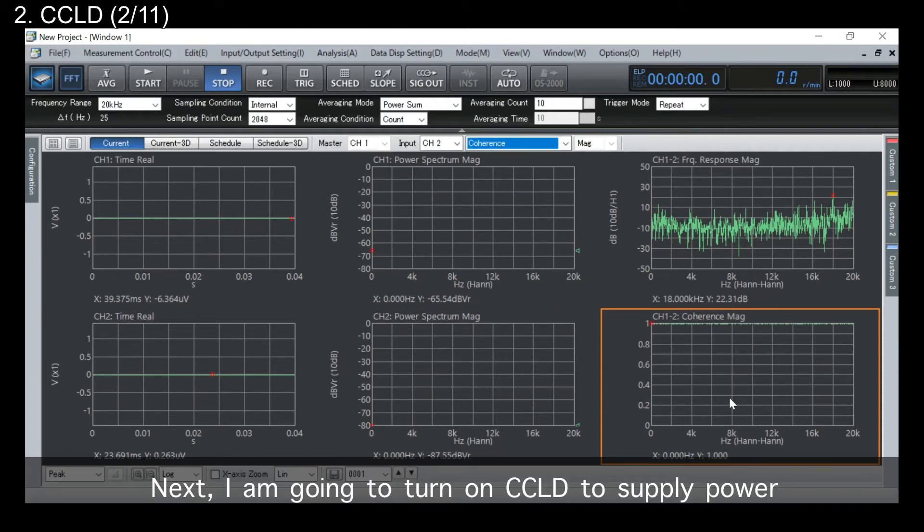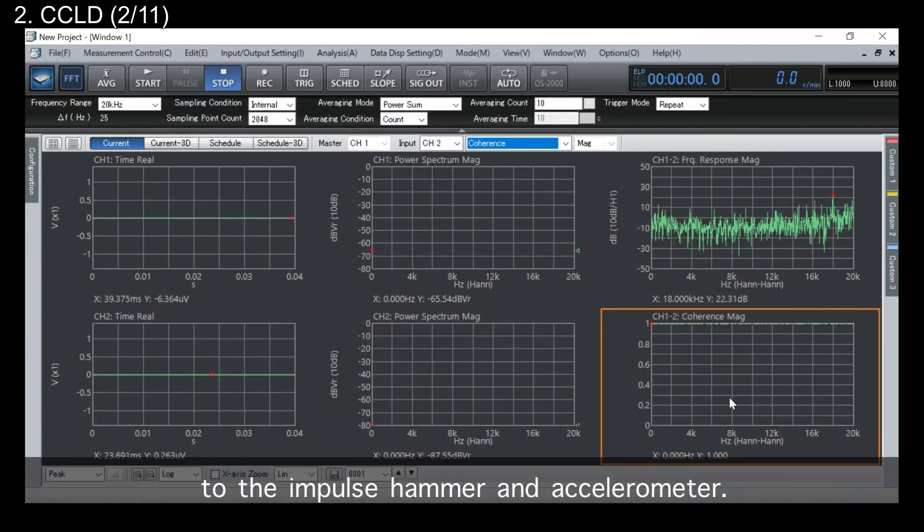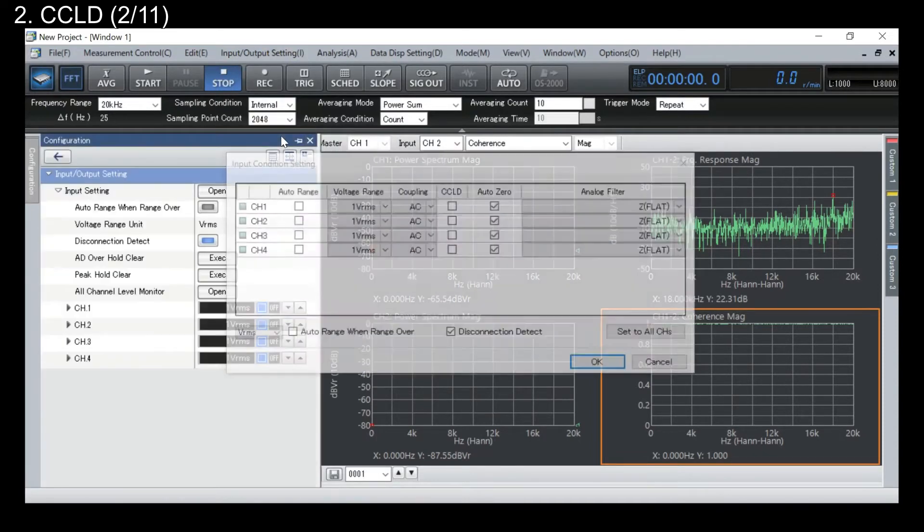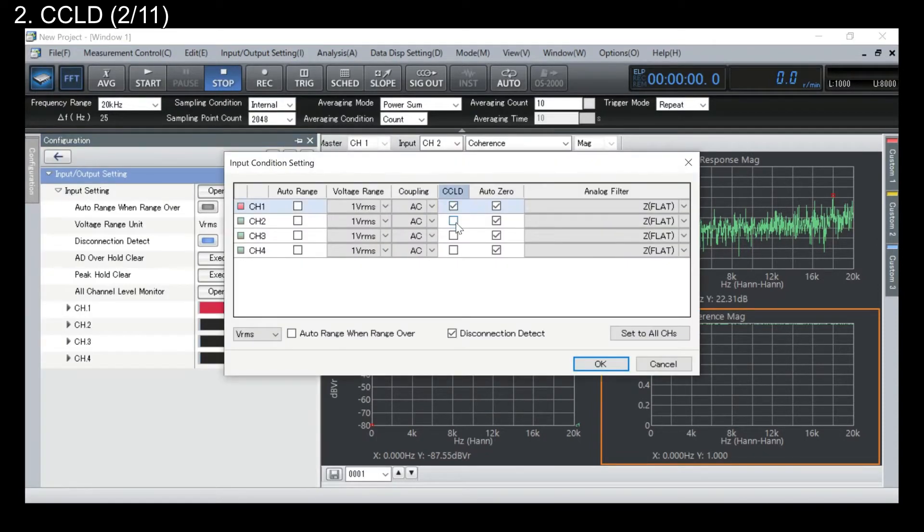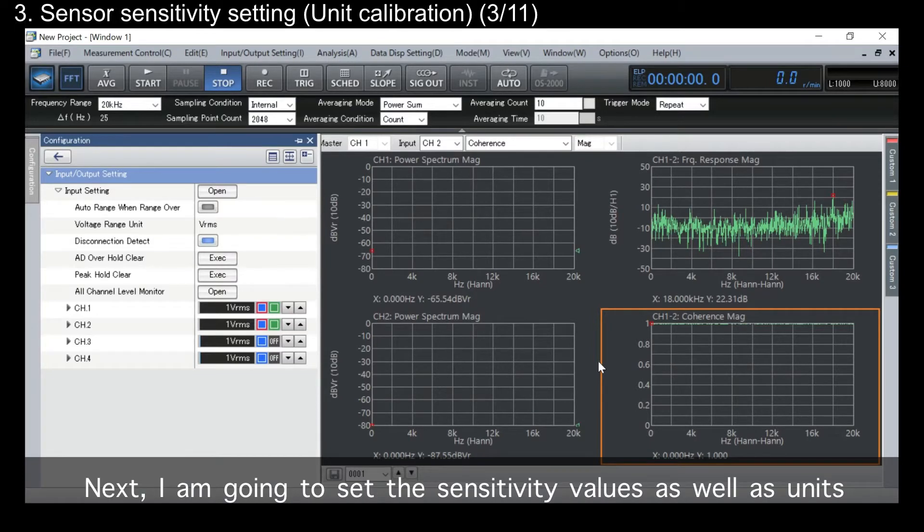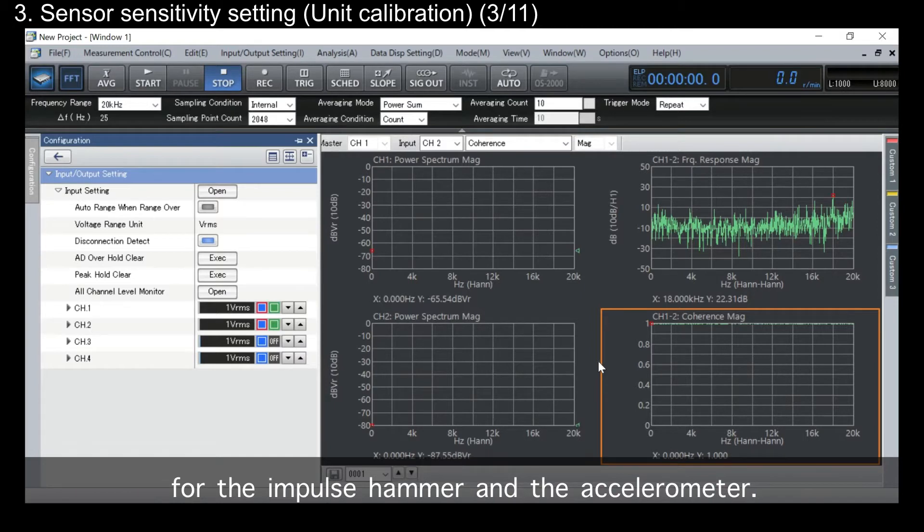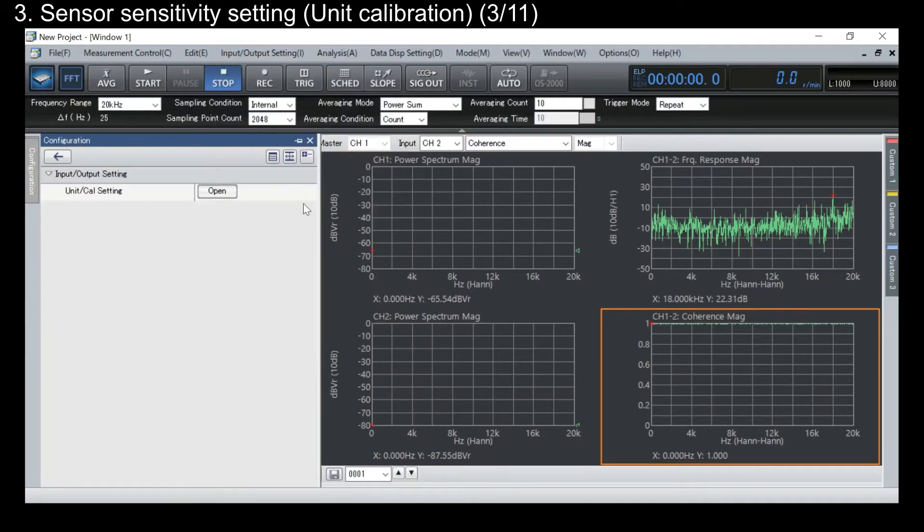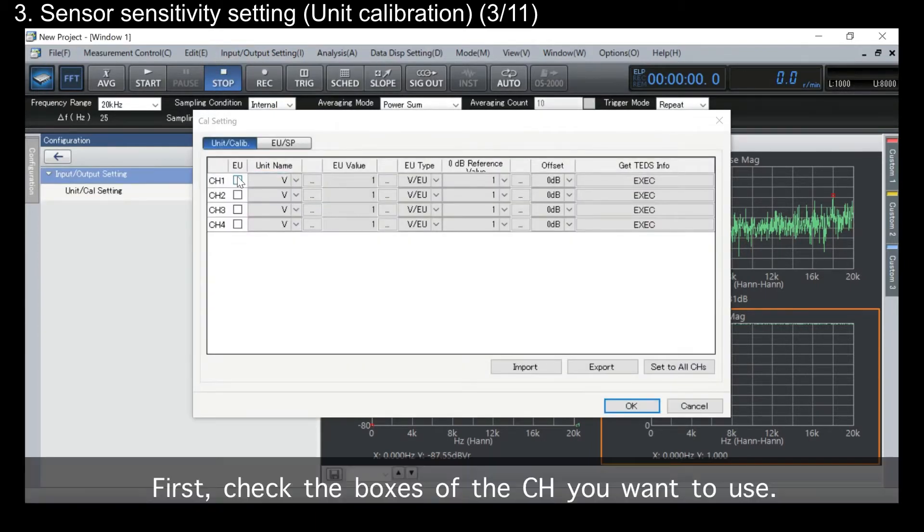Next, I'm going to turn on CCLD to supply power to the impulse hammer and accelerometer. First, check the boxes of the channels you want to use.